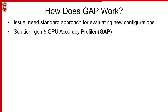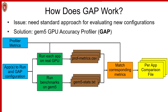But this was a very point-based solution — we tried to optimize something, it didn't work, we had to investigate and find more changes to help. While that was good, it's not scalable. What we really need is a standardized approach for evaluating all the different knobs and settings we might tweak when running GPU simulations in GEM5. That's what motivated the work I'm presenting today: the GEM5 GPU Accuracy Profiler, or GAP.